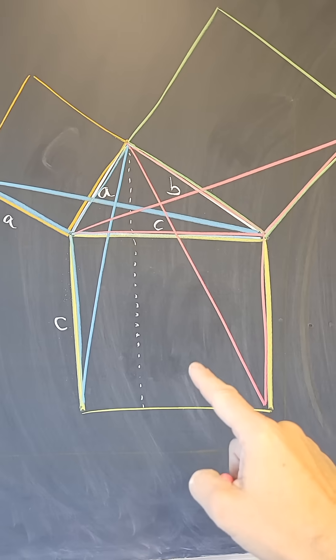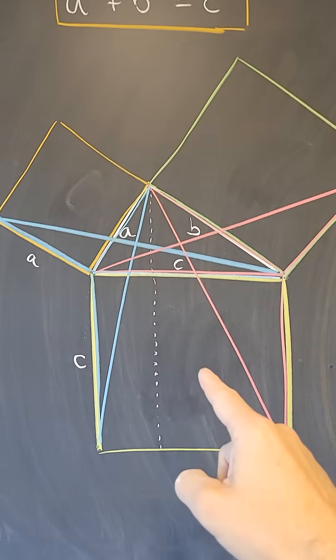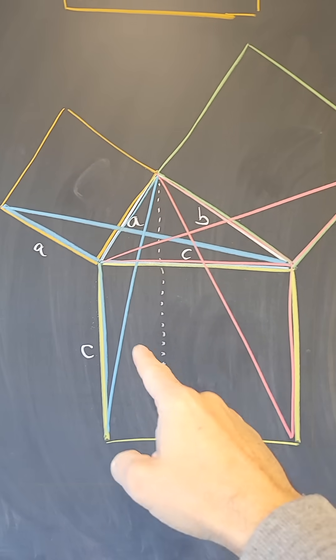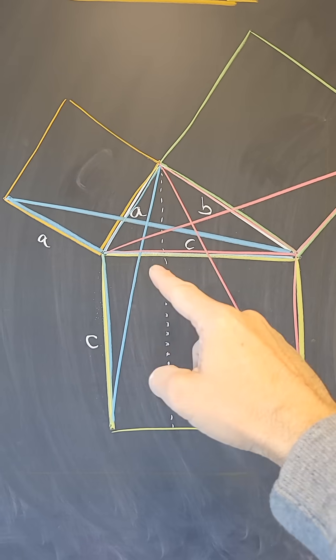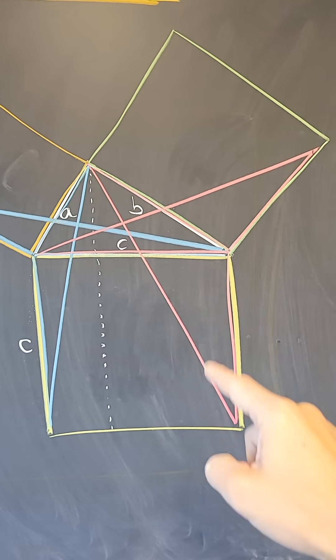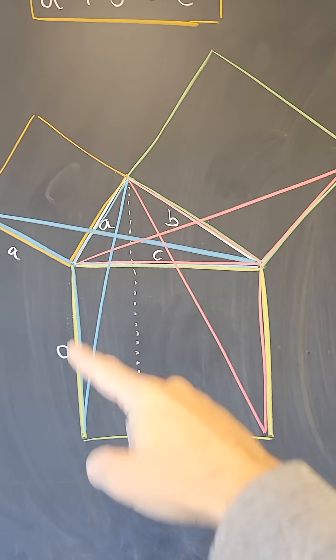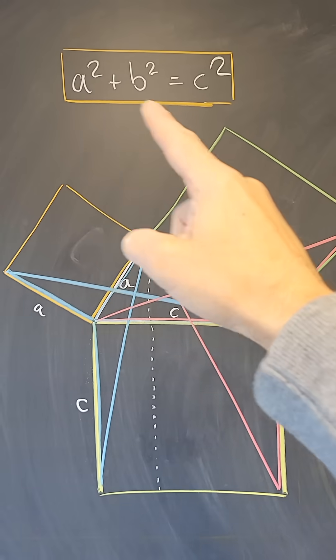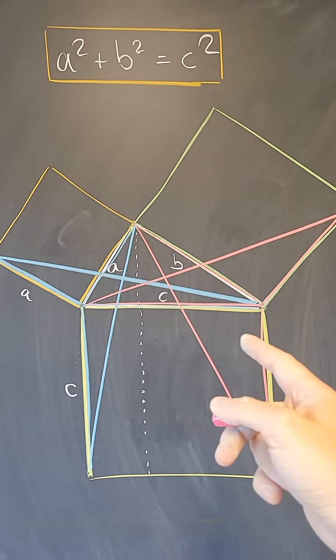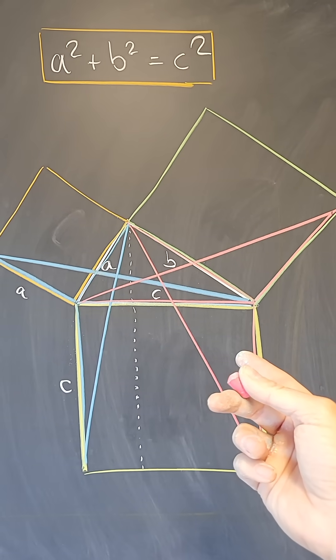So this square, which is C squared, is equal to A squared. We decided that this rectangle has area A squared. This rectangle here has area B squared. And therefore, C squared is equal to A squared plus B squared, which is the theorem we wanted to prove.